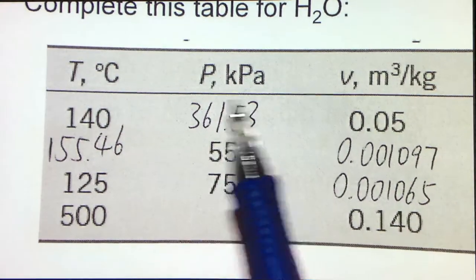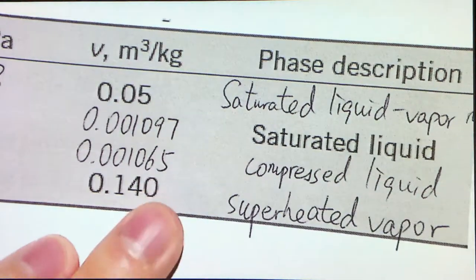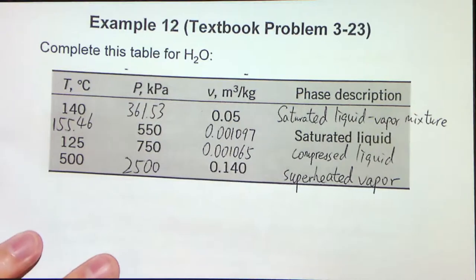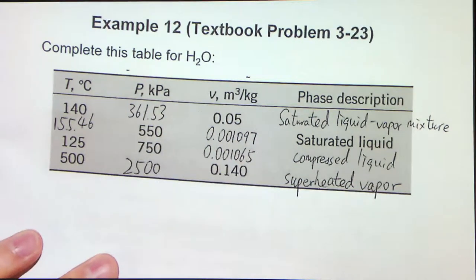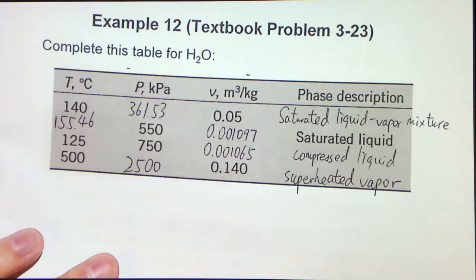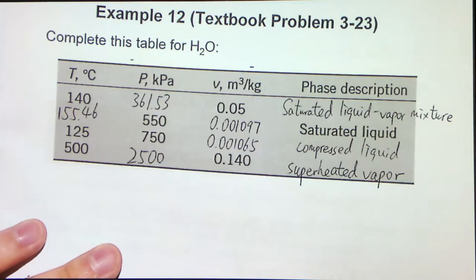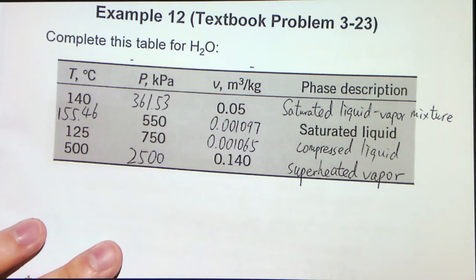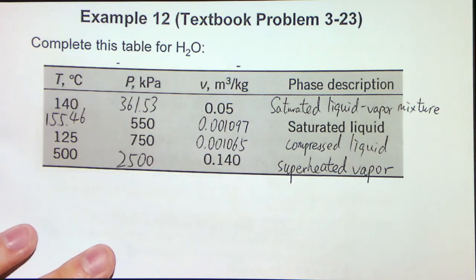This is a good summary of what we have talked about regarding the property tables. We have tables for the saturated state, the compressed state, and the superheated state. For the compressed state, we usually need to use an approximation because the compressed state has very little deviation from the saturated liquid data, so a separate table would essentially yield the same values. This example has illustrated how to integrate what we learned in section 3.4. You need to acquire this skill because in subsequent chapters, we will use these integrated skills very often, as pure substances may undergo many changes of state. That concludes section 3.4. Thank you.